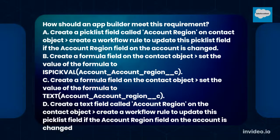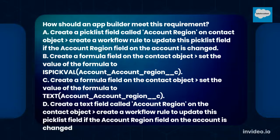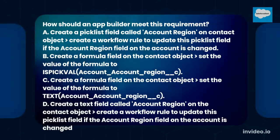A. Create a picklist field called 'account region' on the contact object, then create a workflow rule to update this picklist field if the account region field on the account is changed. B. Create a formula field on the contact object, then set the value of the formula to ISPICKVAL(account__account_region__c).